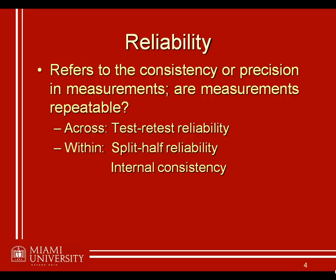The other type of within-instrument consistency is called internal consistency. This one is a little more complicated to measure, but essentially it looks at how well all of the items point in the same direction. Rather than just comparing the first and second half, or the odd items to the even items — both of which would be split-half reliability measures — internal consistency looks at how well each of the different items on a specific scale are measuring the same thing as every other item on the scale.